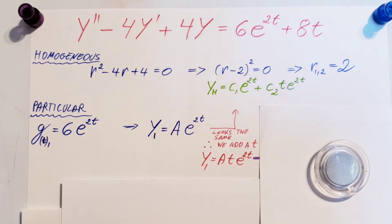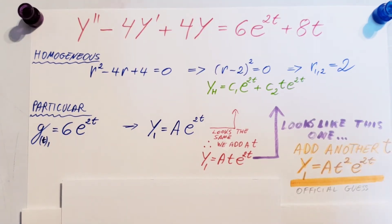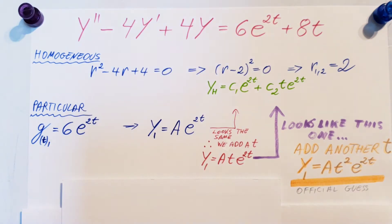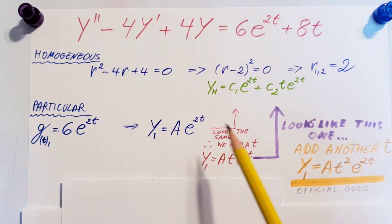Again, this would be all nice, but again, we need to compare again. This now looks exactly like this one. So, we didn't really get out of the woods yet. But we don't need to get scared. All that means is we need to add another t. So, now we have y1 equals At to the squared e to 2t.